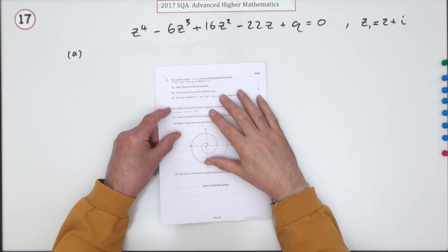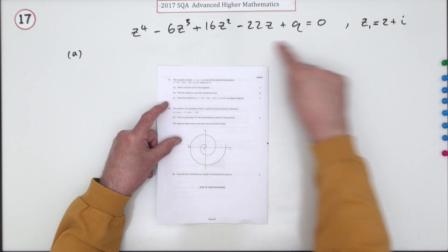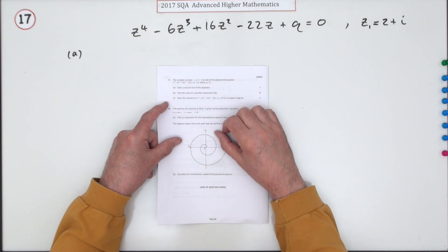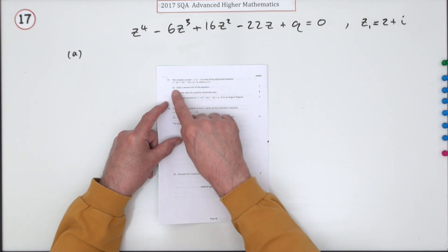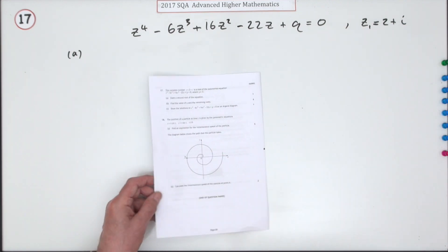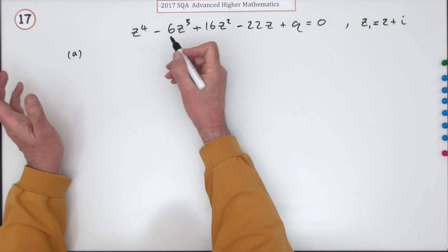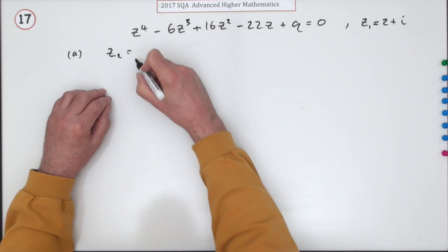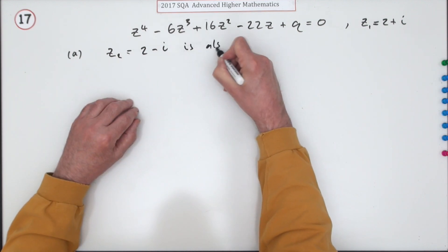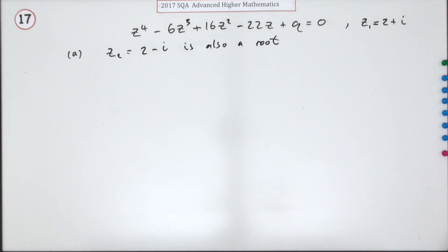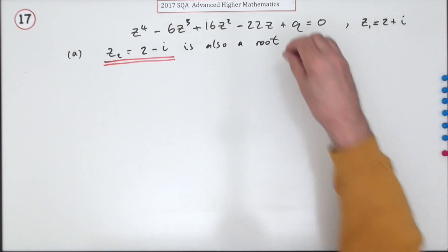Number 17 from the 2017 Advanced Higher Maths, eight marks, on complex numbers. You're given a polynomial equation of degree four, so it's going to have four complex roots. It gives you one root to begin with, and for the first mark you have to state a second root. If that's a root, then its complex conjugate must also be a root.